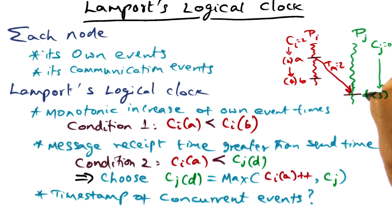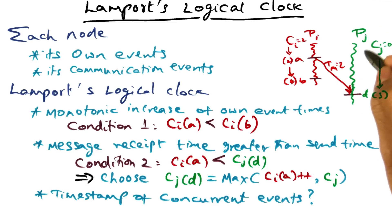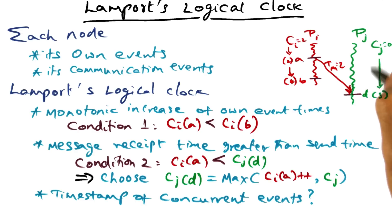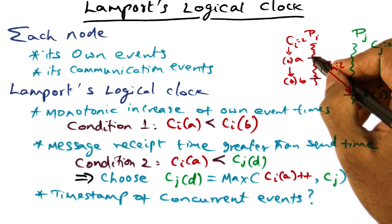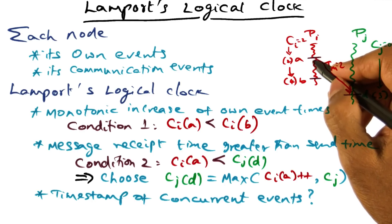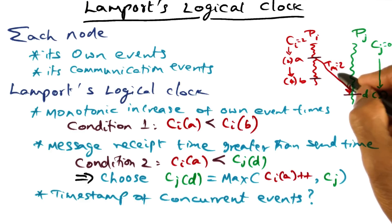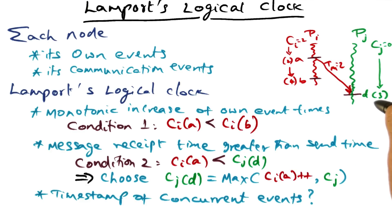What else does D depend on? It also depends on other things happening in my own process — I need to know the current state of my local counter CJ. In this execution, nothing meaningful has happened yet, so the local counter is still at 0. When this message arrives, that's the first meaningful event in this process. I can't assign timestamp 0 to D because it must exceed the send event's timestamp of 2, so I associate timestamp 3 with the receipt of this message — event D gets a timestamp of 3.